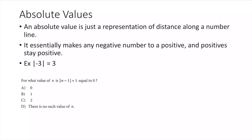Last topic: absolute values. An absolute value is just a representation of distance along a number line — basically it takes a negative number and makes it positive. For example, the absolute value of -3 is just positive 3.